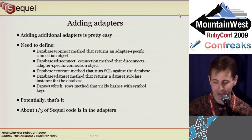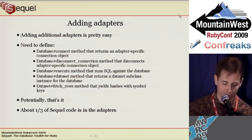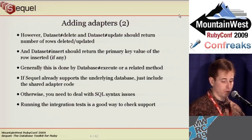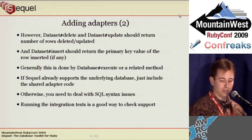One reason Sequel supports many adapters is that adapters are easy to write — only five methods are required. Adapters range in size from 50 lines for OpenBase to 1,200 for PostgreSQL. The PostgreSQL adapter supports three native drivers, native prepared statements, and even methods to add database triggers and functions, which is why it's so large. Sequel is designed for flexibility over performance, so adding support for a new database generally just requires overriding a few short methods.